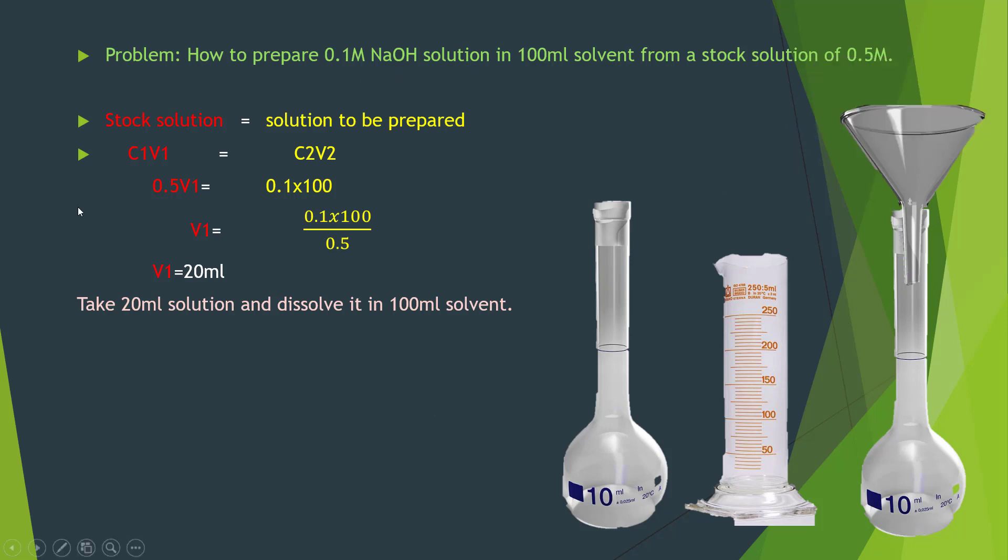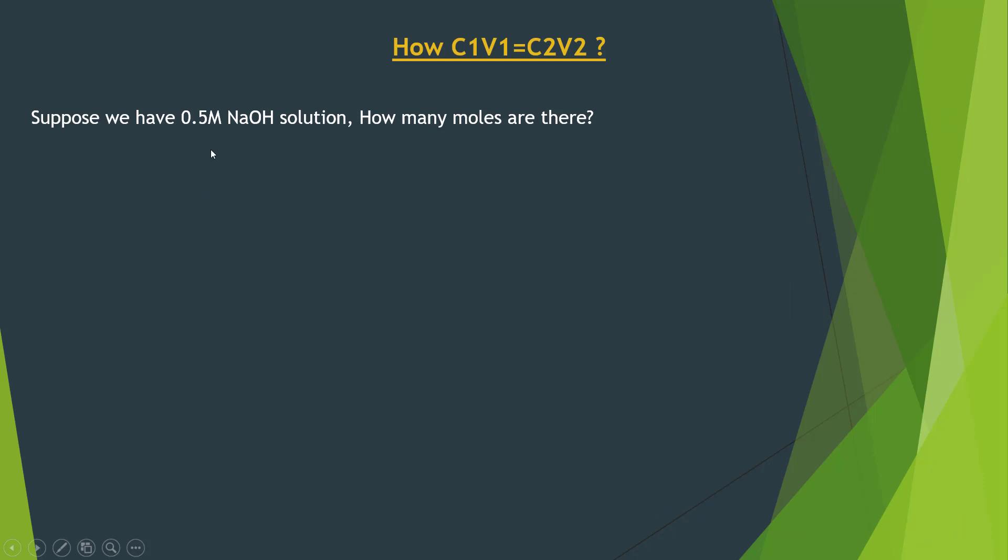Now, you might be wondering how this C1V1 comes out to be equal to C2V2. Let me show you. Suppose we have 0.5 molar NaOH solution, how many moles are there? You know number of moles are always equal to concentration times volume. Let's put in 0.5 into 100 and this would give us 50 moles.